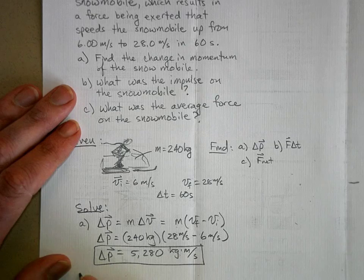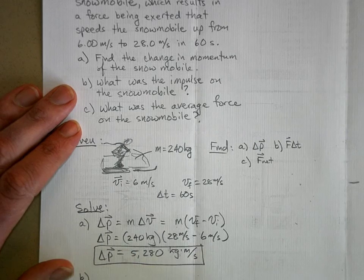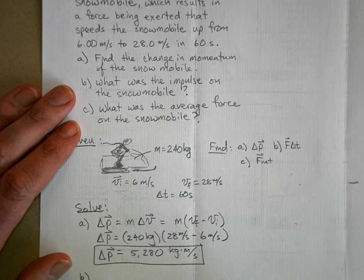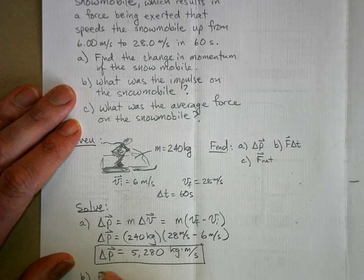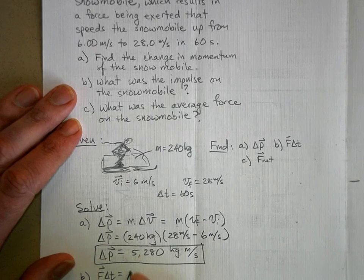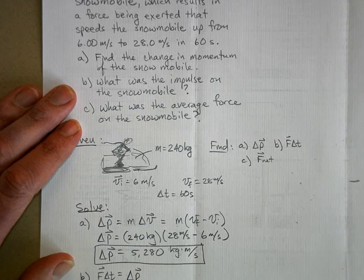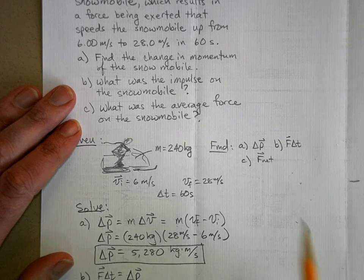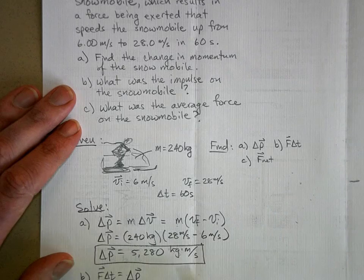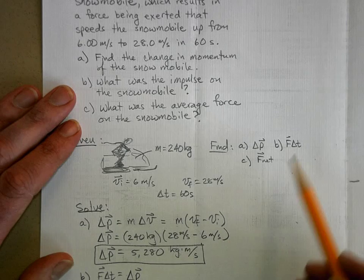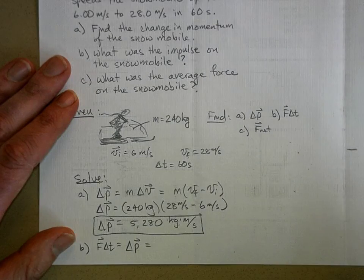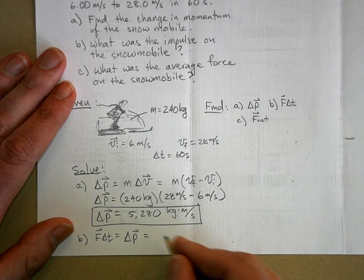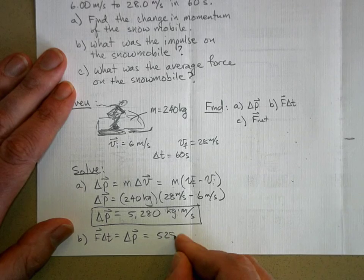So for part B, force times time is equal to the change in momentum of an object. That's the impulse momentum theorem. So we figured out what the change in momentum is, and now we want to find the impulse. Well, it's the same thing. It is now 5,280.